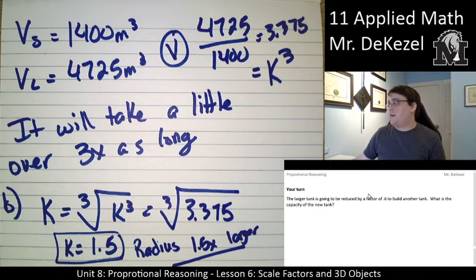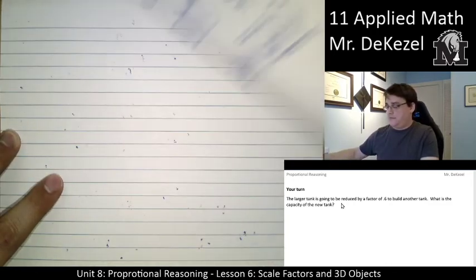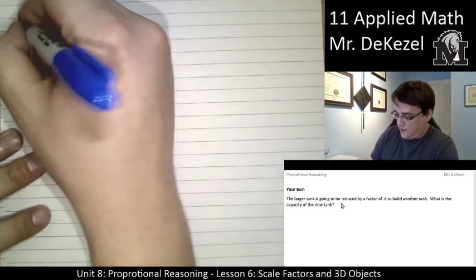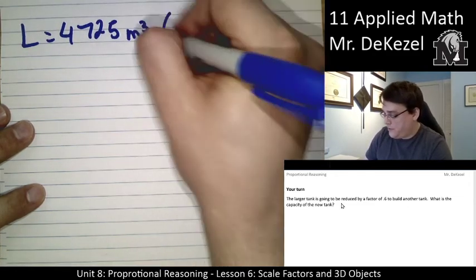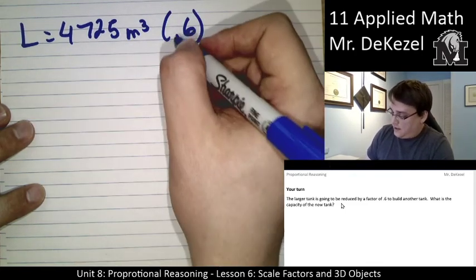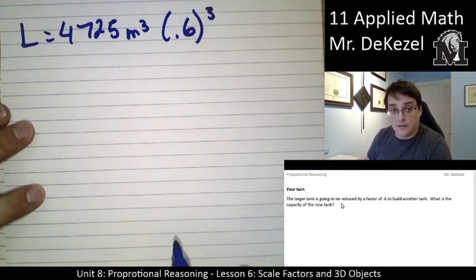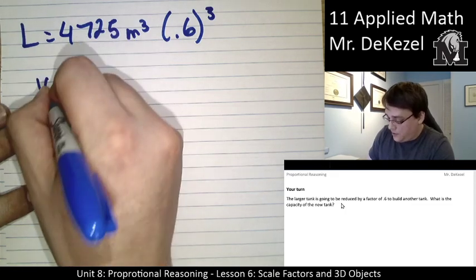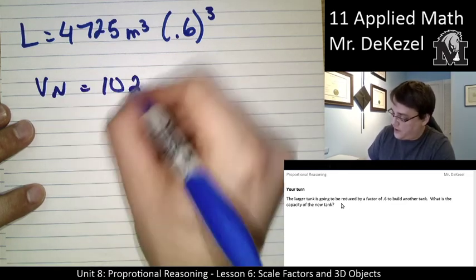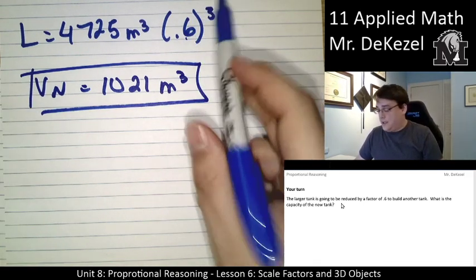Now, there is a question here for your turn. So, the larger tank is going to be reduced by a factor of 0.6 to build another tank. What is the capacity of the new tank? So, you can pause it here, and when you are done, unpause. So, if the larger tank is equal to 4,725 meters cubed, we are shrinking it by a factor of 0.6. So, we are going to be multiplying it by 0.6. And it is going to be reduced by a factor of 0.6, but since we are dealing with volume, we need to cube that. We need to take 0.6 times itself, 3 times. If we do that, and we multiply this by 4,725, the volume of the new tank is equal to 1,021 meters cubed. So, that is the volume of the new tank. And we use the k-factor cube because it is a volume problem.